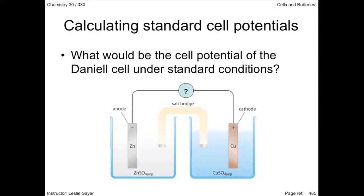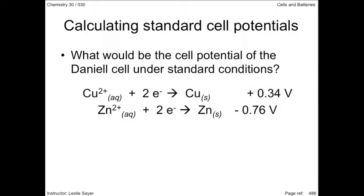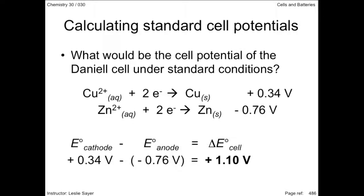Here's an example: what would the cell potential of the Daniell cell be under standard conditions? The diagram indicates which is the anode and which is the cathode, but even without it, you could use your data book to determine what is being oxidized and reduced. For voltaic cells, the reaction proceeds spontaneously. First, write the reduction half-reactions with their reduction potentials. Substituting E-cathode for the strongest oxidizing agent and E-anode for the strongest reducing agent, the positive value confirms the spontaneity of the reaction. Since the reduction potentials are both related to the same reference half-cell, we can use these values directly in the equation.